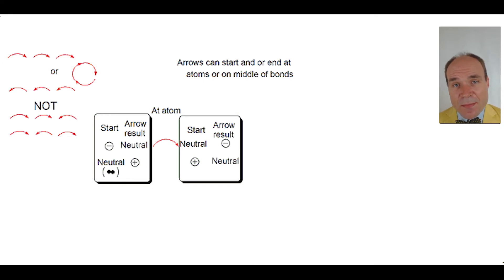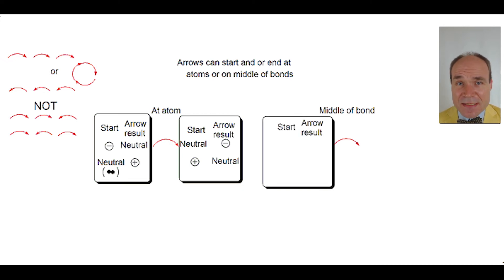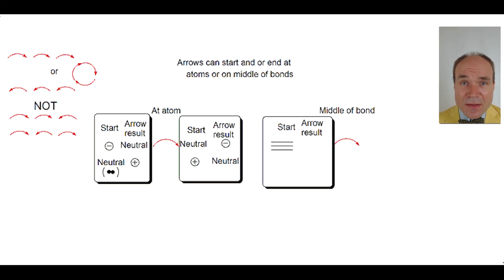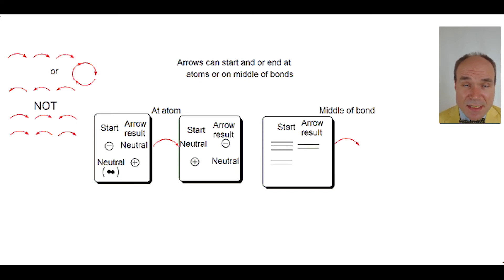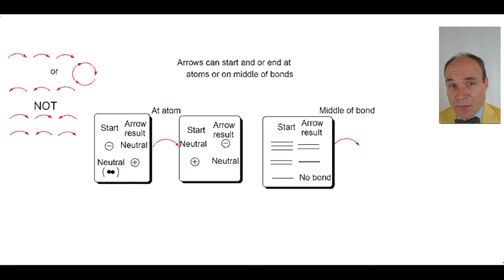Now we're going to move on to talk about what happens at the middle of a bond as a result of an arrow beginning or ending there. If an arrow begins in the middle of a bond: if that bond is a triple bond, the consequence of the arrow movement will make it a double bond; if the bond begins as a double bond, the consequence will make it a single bond; and if the bond begins as a single bond, the consequence will make it no bond at all.